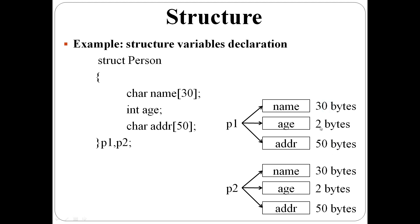And the third variable is a character array of size 50. So addr has 50 bytes reserved. This memory is in continuous locations. Then second variable p2. p2 also has name 30 bytes, age 2 bytes, addr 50 bytes reserved. p1 is 30 plus 2 plus 50, 82 bytes reserved. p2 also 82 bytes reserved.